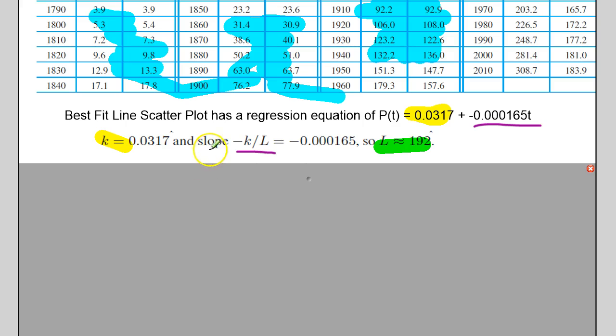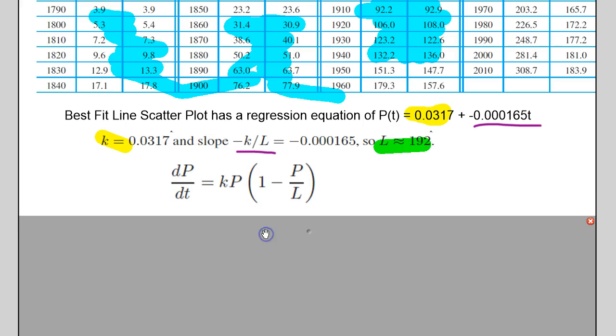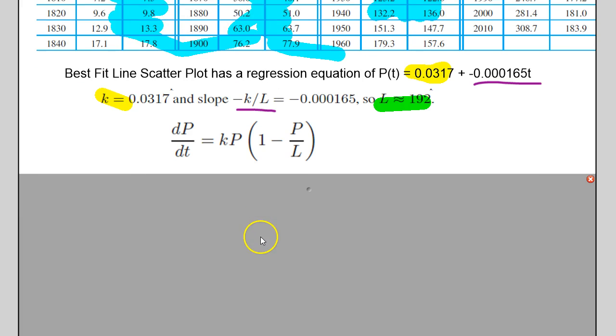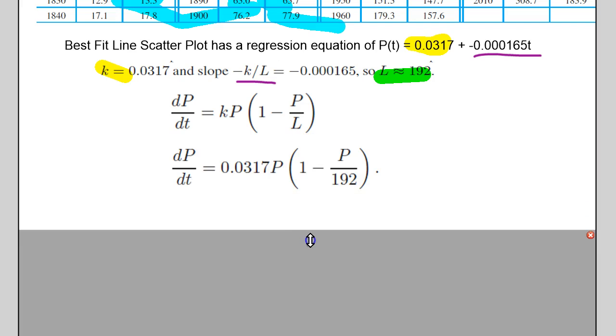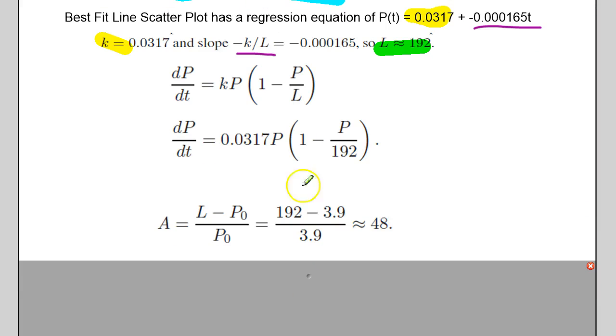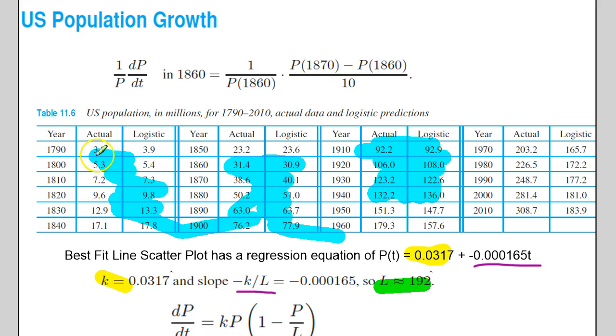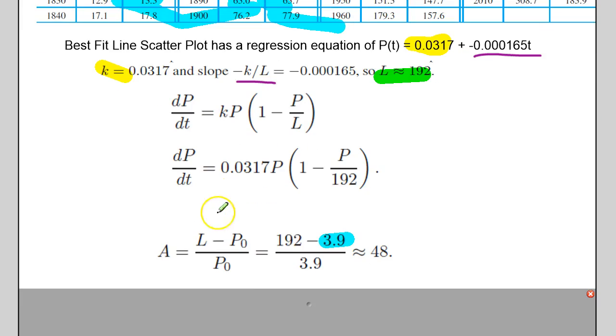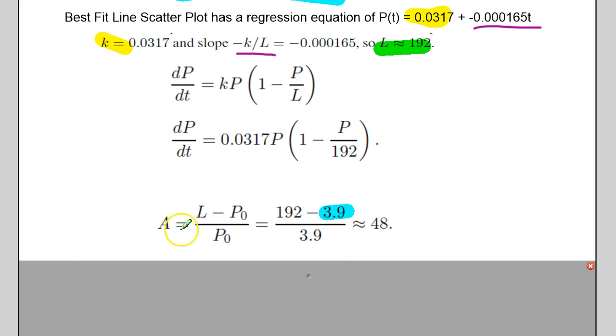Now we're almost ready to come up with the solution to this equation. The only thing we're missing is our A. So they set the initial year, I believe it was 1790, the very first year. The population here is 3.9. So they used the difference between the limiting value of 192 and 3.9, then divided by 3.9 to get our A value. So now we're ready to come up with our logistic model to this differential equation.